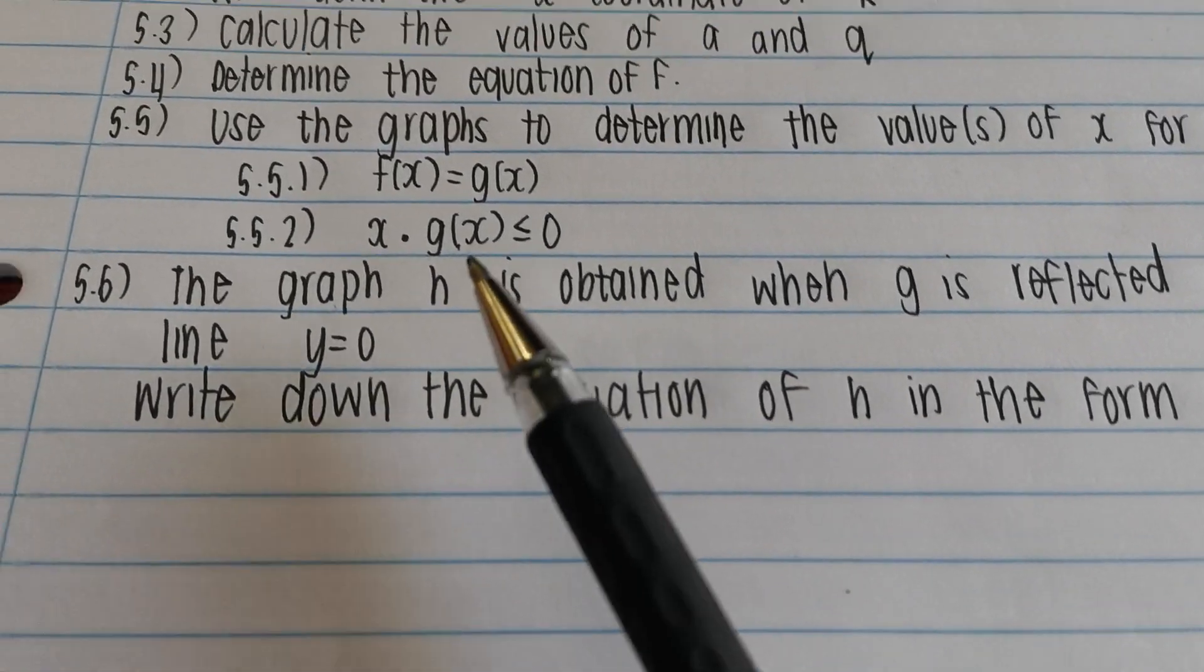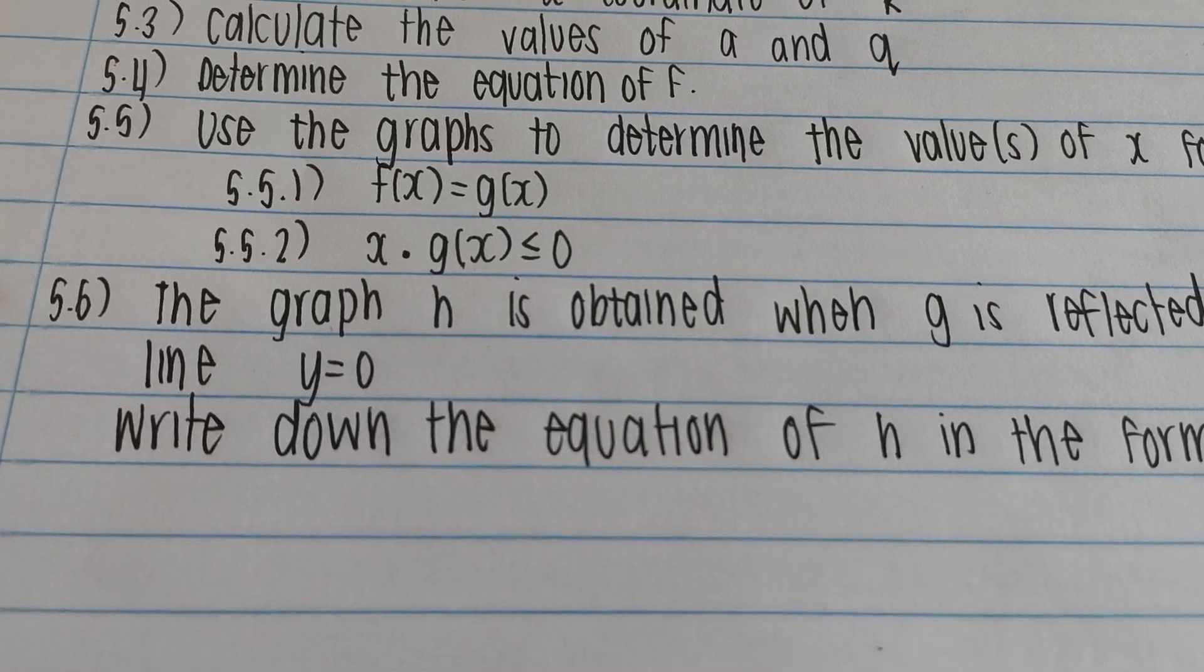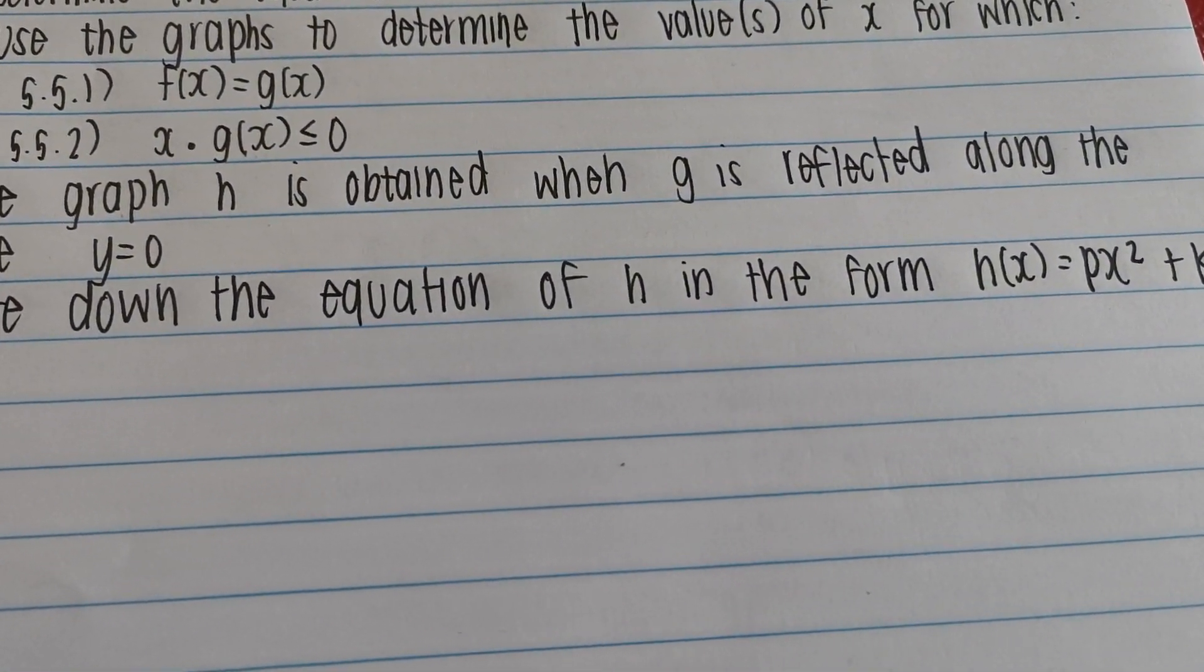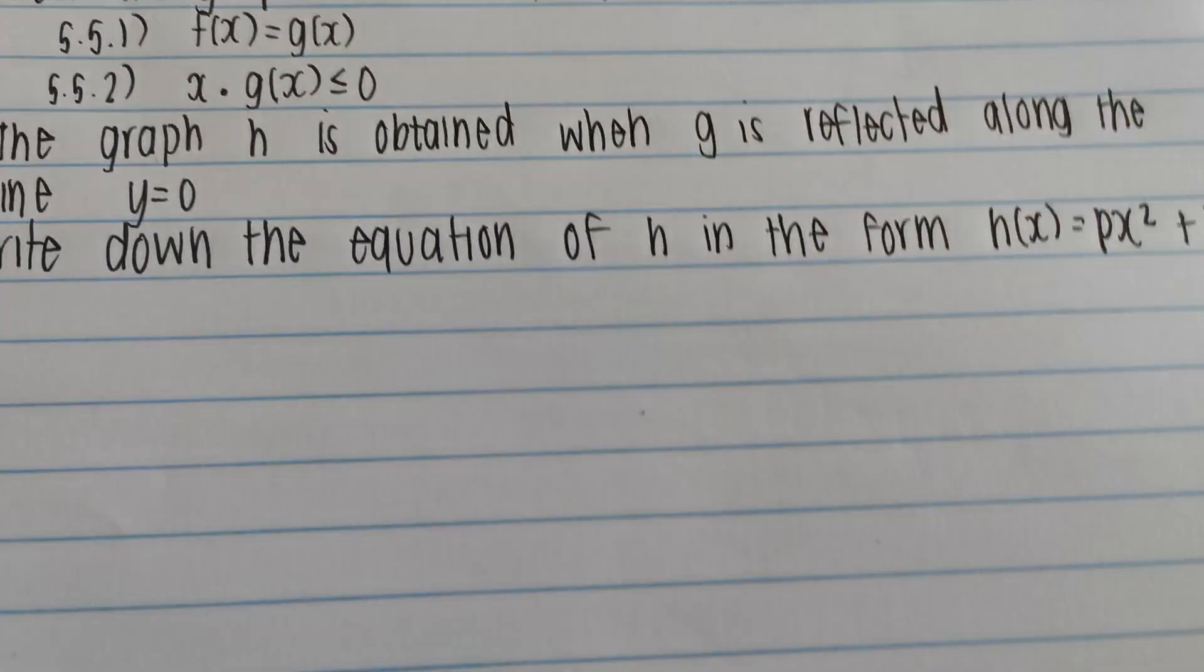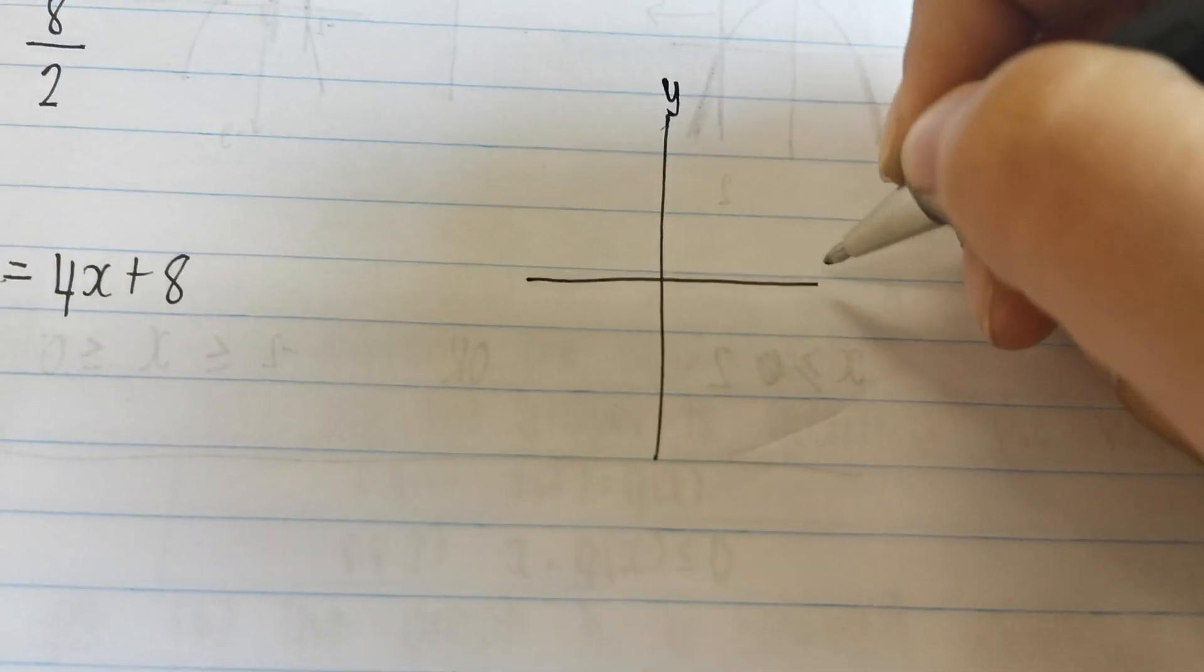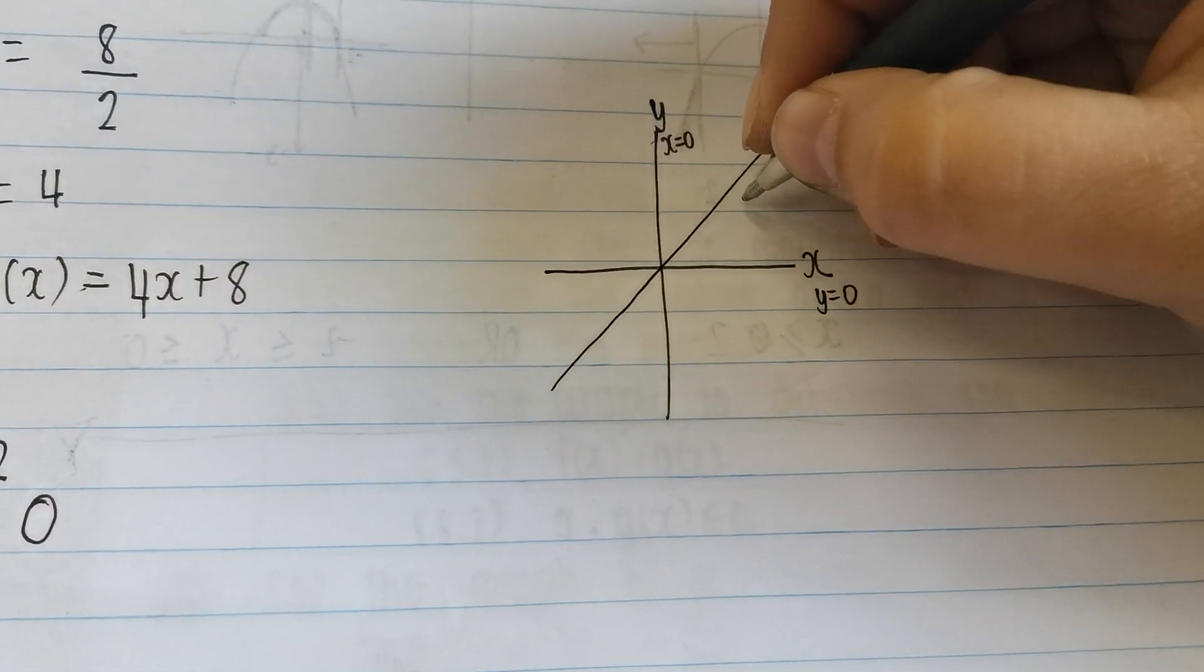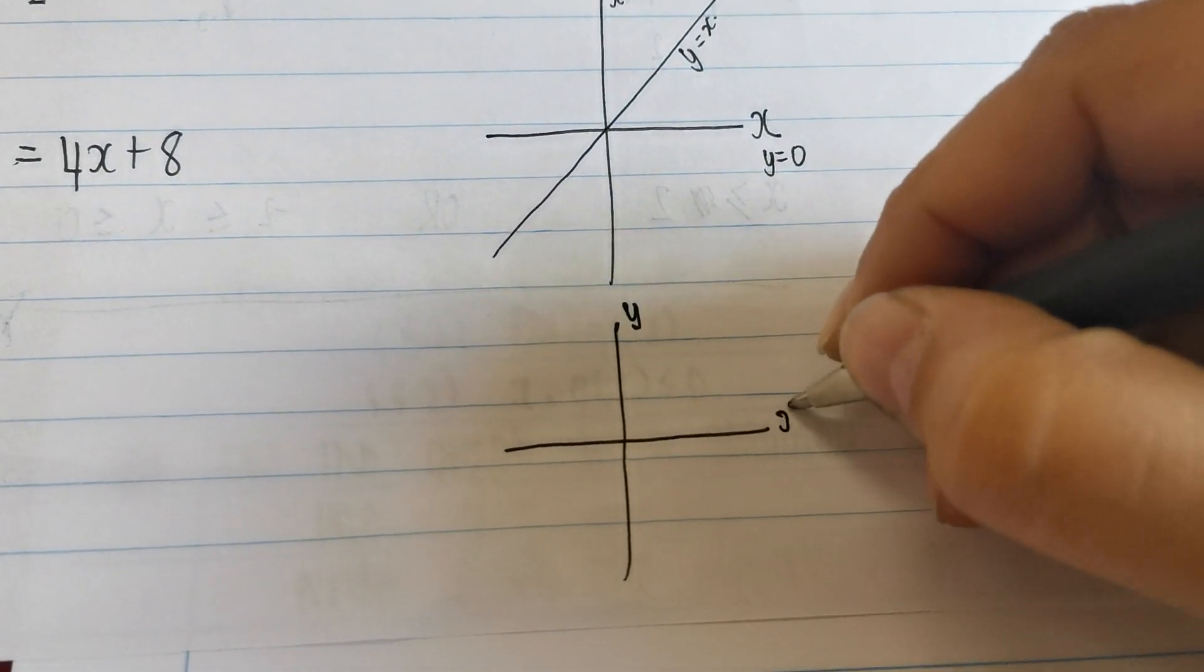Next question. It says the graph h is obtained when g is reflected along the line y is equal to 0. Now, let's first understand what this question is saying. It's saying that we have a reflection. Let's analyze this question. It says the graph of h, so this is a new graph, is obtained when g is reflected. So, we know that there's two types of reflection. Three types of reflection we learned in grade 9, basically. Transformation, geometry, grade 8 and 9. Either it can get reflected along the x-axis. Let's sketch as I'm talking. Either it can get, let me just write this, y-axis, x-axis. If this is the y-axis, x is equal to 0 on this line here. And if this is the x-axis, then y is equal to 0 over here, right?